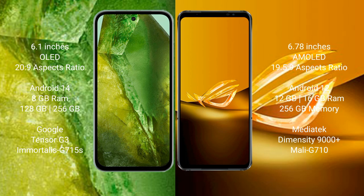The Google Pixel 8a runs on the Android 14 operating system. It comes with 8GB RAM and 128GB or 256GB internal storage, powered by the Google Tensor G3 processor with the GPU G715S. The Asus ROG Phone 6D comes with 12GB or 16GB RAM and 256GB internal storage.